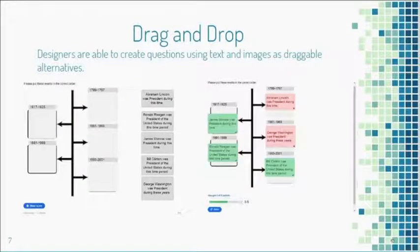The 'drag and drop' activity mirrors the word sorts that many primary teachers do at centers. A teacher asked Joni how to do word sorts in Canvas, and this was the easiest solution. In the example shown, it's actually a timeline, but the same concept applies. The left picture shows the start state and the right shows the completed student answer. It displays a score and allows students to retry. Since it doesn't yet integrate directly with Canvas, students take screenshots and upload them as assignments.